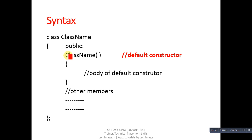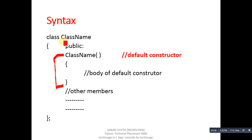Now with the help of the syntax you will be able to understand how you can define a default constructor. The name of the default constructor will be the same as the name of the class, and you don't have to use any return type. Inside the curly braces you can define the body of the default constructor. After the default constructor you can define other member functions related to that particular class.